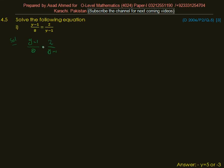There is an equal sign between the two terms, so we apply cross multiplication here. y minus 1 multiplied by y minus 1 is equal to 2 multiplied by 8.